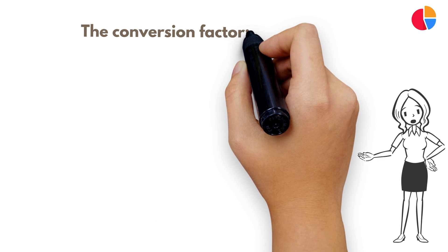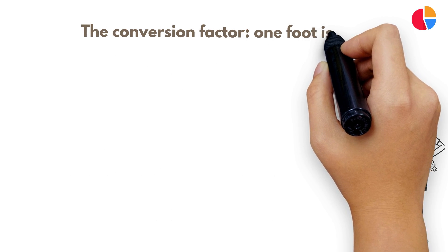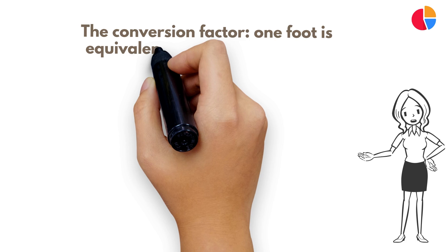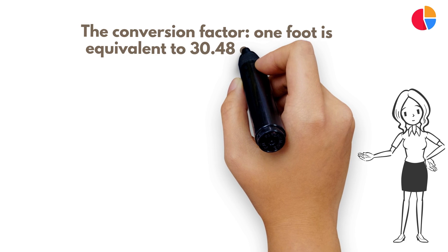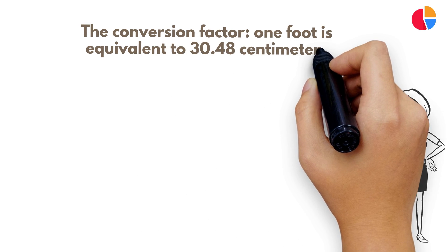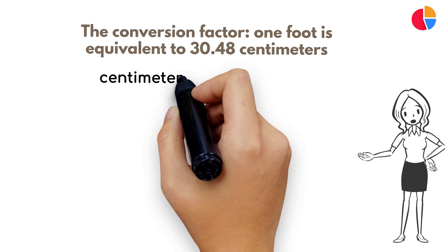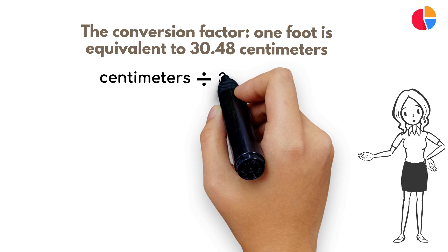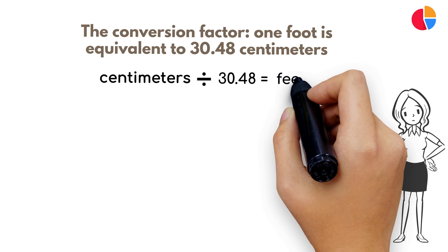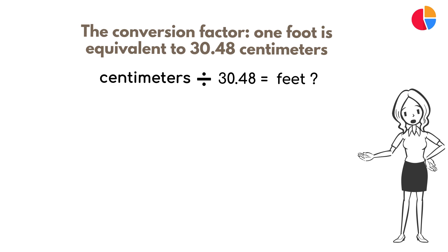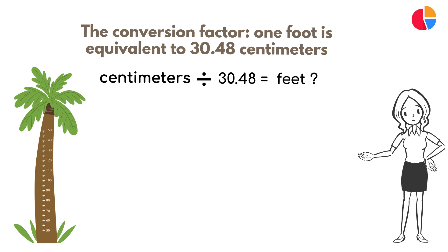Firstly, let's get familiar with the conversion factor. One foot is equivalent to 30.48 centimeters. To convert from centimeters to feet, you simply divide the number of centimeters by this conversion factor.